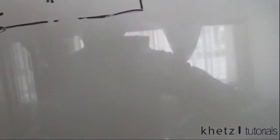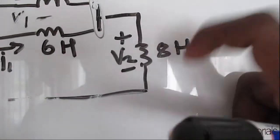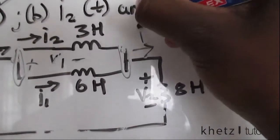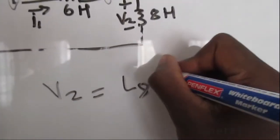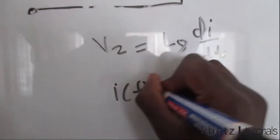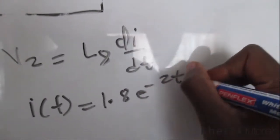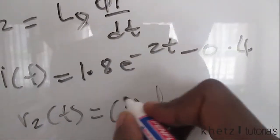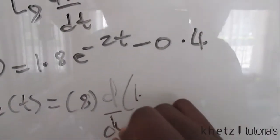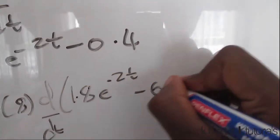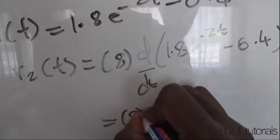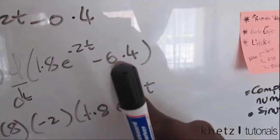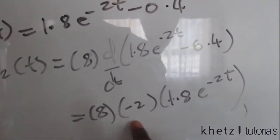Moving on to find v2(t): v2 is indicated across the 8-henry inductor, and the total current i(t) flows through it. We know v2 = L8 · di/dt, and i(t) = 1.8e^(-2t) - 0.4. Differentiating: v2(t) = 8 × (-2) × 1.8 × e^(-2t). The constant term differentiates to zero, leaving v2(t) = 8 × (-2) × 1.8 × e^(-2t).